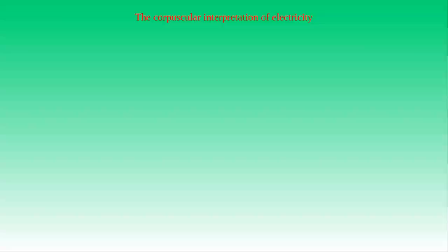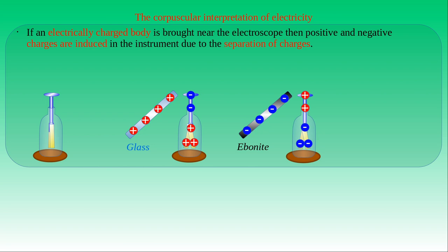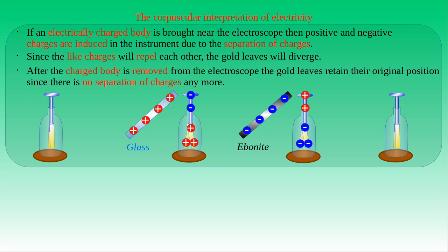We can also ask what happens to the electroscope in these experiments in light of the corpuscular theory. If an electrically charged body is brought near the charging plate of the electroscope, both negative and positive charges are induced in the measuring device due to the separation of charge. The charging plate and the gold leaves attain opposite charges. If we use a positively charged glass rod, the plate becomes negatively charged and the leaves attain positive charge. If we use a negatively charged ebonite rod, the plate becomes positively charged and the leaves attain negative charge. Since like charges on the two gold leaves repel each other, the leaves will diverge. If we remove the charged body, the gold leaves relax — that is, the instrument has no longer induced charge.